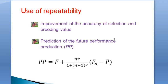Now, what is the importance of the use of repeatability? Repeatability is used for the improvement of the accuracy of selection and the accuracy of the breeding value. When we start the chapter on how to design a genetic improvement program, we will better see how to use it to improve on the accuracy of the breeding value.